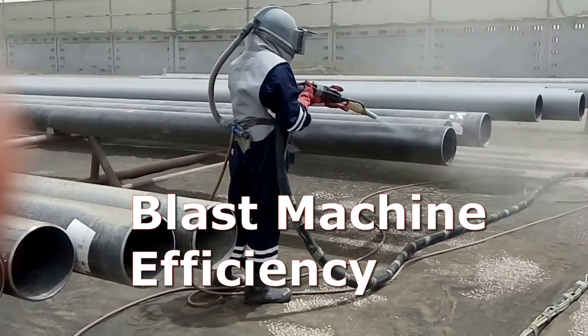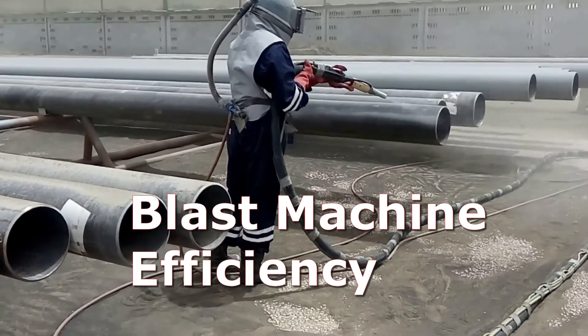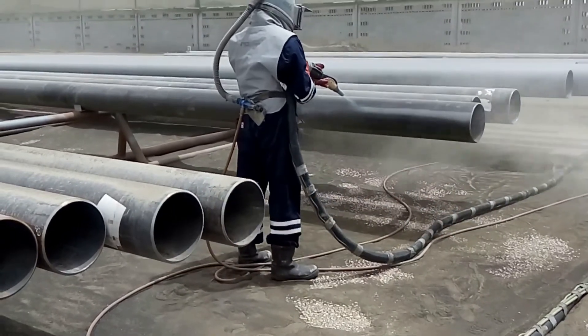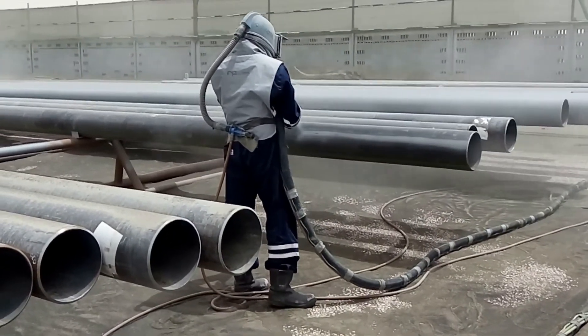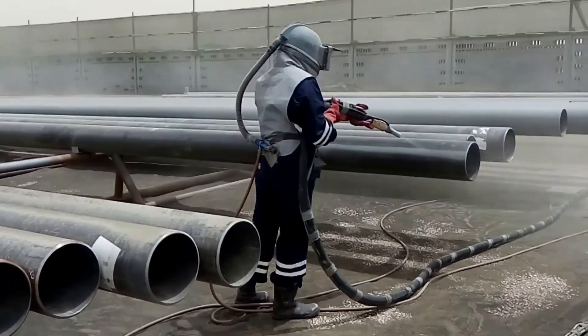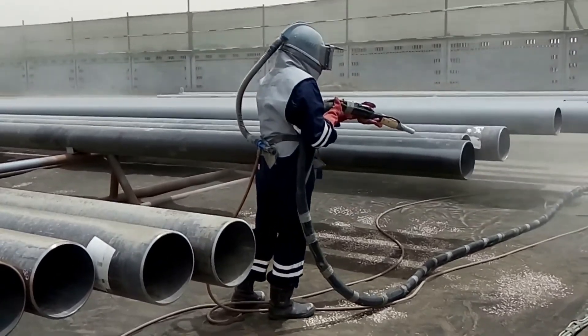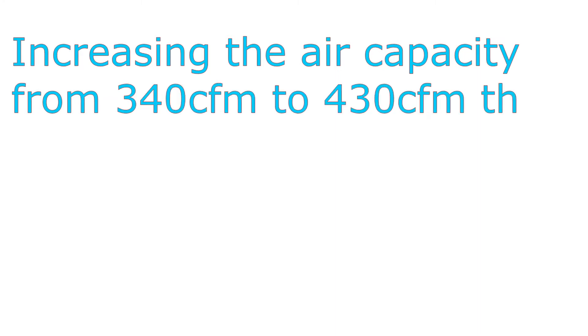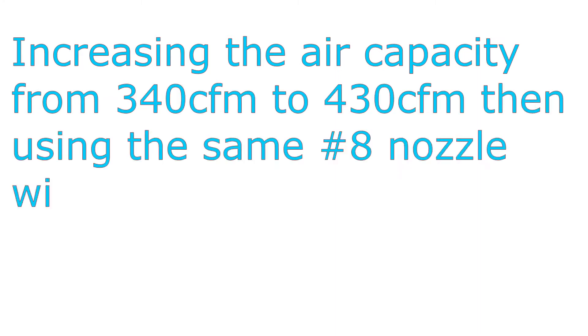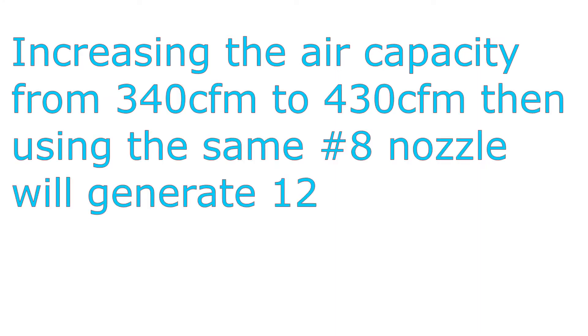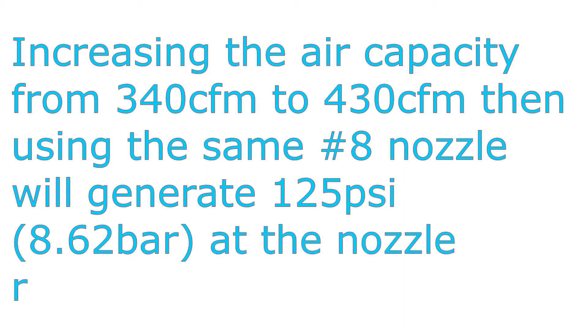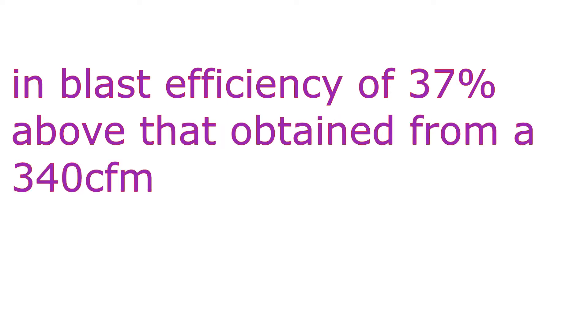The air capacity, nozzle size, and nozzle pressure equation also suggests that blast efficiency will increase further if nozzle pressures above 100 PSI are used. Increasing the air capacity from 340 CFM to 430 CFM using the same No. 8 nozzle will generate 125 PSI at the nozzle, resulting in an increase in blasting efficiency of 37% above that obtained from the 340 CFM compressor.